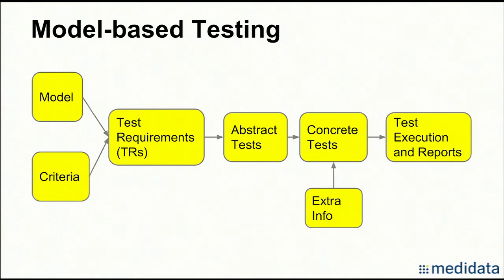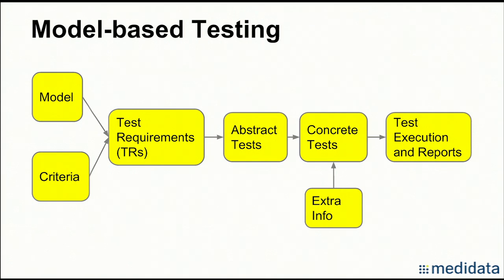Next I'm going to show the basic steps of model-based testing. In this research, I generated criteria-based tests, meaning I used coverage criteria to generate test requirements. Coverage criteria are rules about how to generate test requirements, and test requirements are artifacts that have to be covered in tests. I used UML state machine diagrams treated as general graphs, and applied graph coverage criteria to the models to generate test requirements, which are sub-paths on a graph.